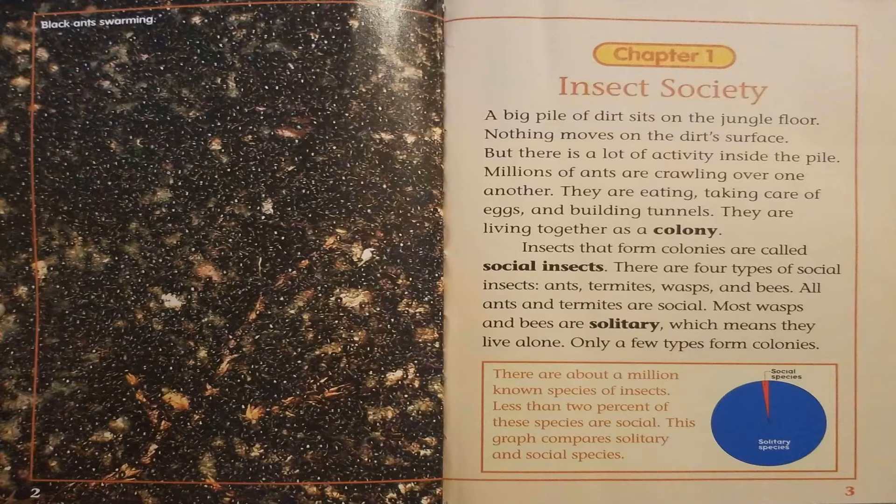All ants and termites are social. Most wasps and bees are solitary, which means they live alone. Only a few types form colonies. There are about a million known species of insects. Less than 2% of these species are social. This graph compares solitary and social species.